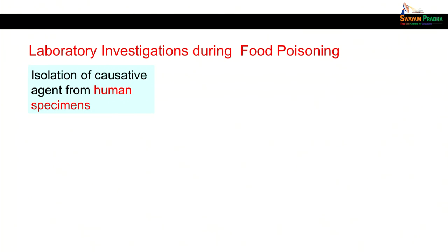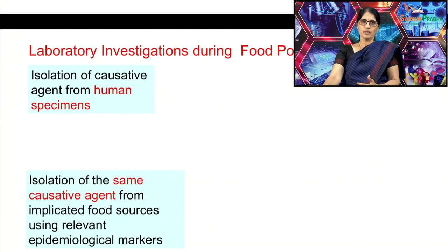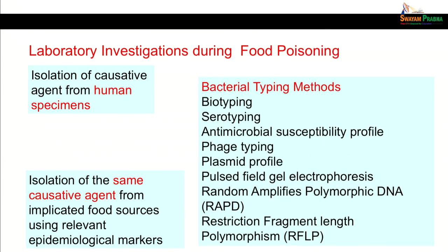For laboratory investigations during food poisoning, the first important step is isolation of the causative agent from human specimens, followed by isolation of the same agent from the incriminated food source, and then demonstrating similarity between the strains. Typing methods used include phenotypic methods like biotyping, serotyping, antimicrobial susceptibility profiling, and phage typing; and genotypic methods like plasmid profile analysis, pulsed-field gel electrophoresis, random amplified polymorphic DNA, and restriction fragment length polymorphism.